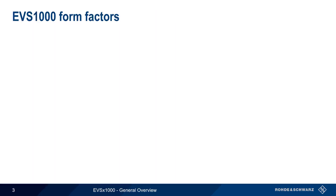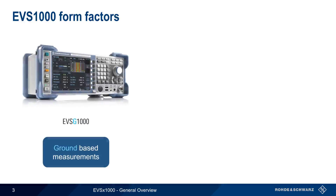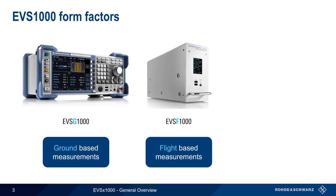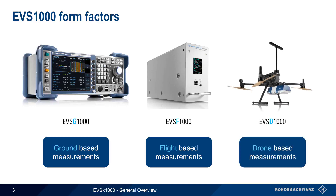The EVS1000 comes in three form factors. The EVSG1000 is primarily designed for ground-based measurements, although it can also be used in airborne applications. It has a full-color screen and is usually operated via the front panel buttons or knobs. The EVSF1000 is designed specifically for use in flight inspection aircraft and is equipped with a standard A-Rank style connector. The EVSD1000 is a drone-based version of the EVS, designed for guided or autonomous data collection.